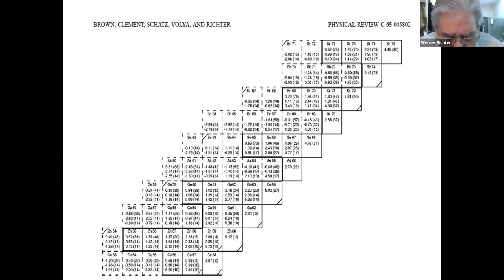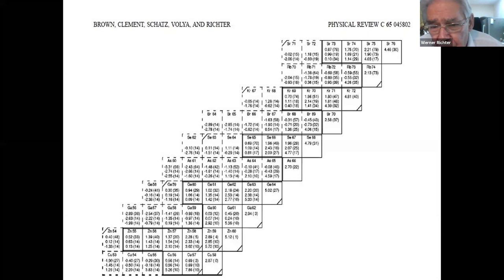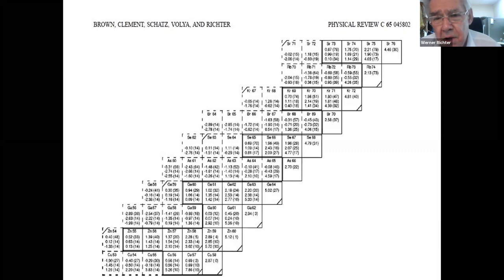Let me just go back with some historical background. In 2000, Alex Brown, myself, and Robbie Lindsay — before we defected to applied physics — did some calculations of isospin symmetry on mirror nuclei calculating Coulomb displacement energies. We got some very nice results, which gave us confidence that we should apply this across the stability line for neutron-rich nuclei for which the masses are well known, and then we can predict masses on the proton-rich side.